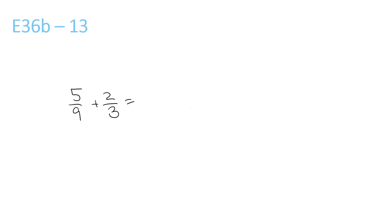Times the top and bottom by 3 for this one to get 5 over 9, plus 6 over 9, which gives you 11 over 9. Now 9 goes into 11 once, remainder 2 over 9.